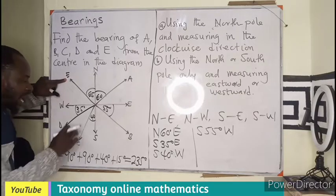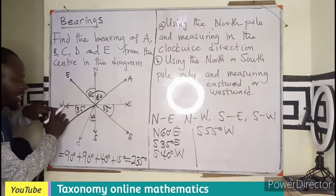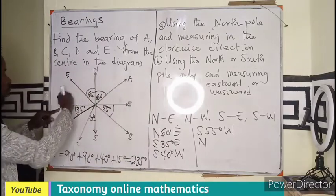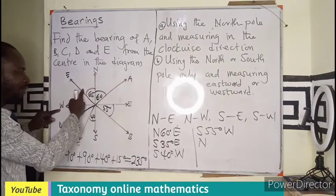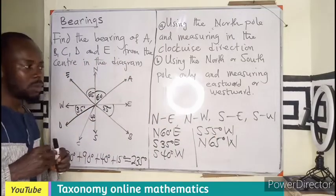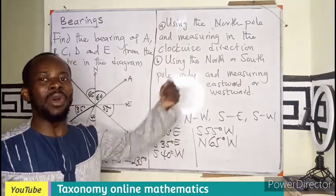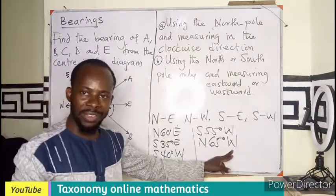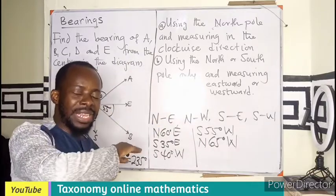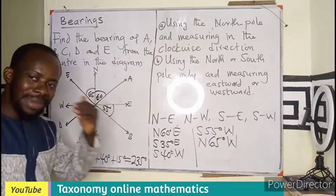For point E, I cannot move the other way, or I would be saying west-north. I have to move from the north towards the west. The angle it makes with the north is 65, so the bearing is N65°W — 65 degrees towards the west. If you are given this, you can also be asked to represent it on a diagram, measuring the acute angle of 65 degrees from the north towards the west.